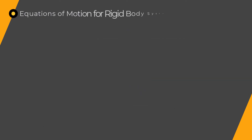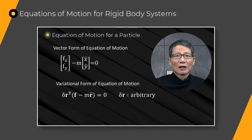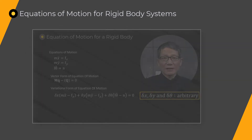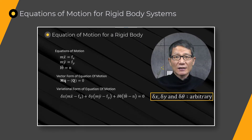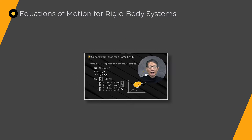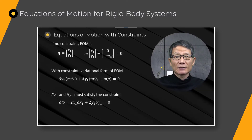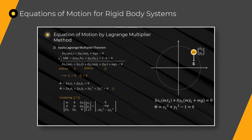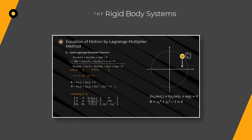Lesson 4 presents Equation of Motion of a Particle, a Rigid Body, and a System of Rigid Bodies, Generalized Force for a Force Entity, Equation of Motion with Constraints, and the Lagrangian Multiplier Method.